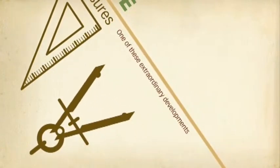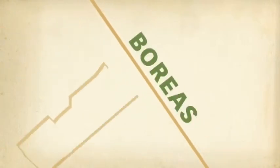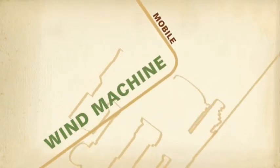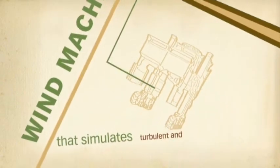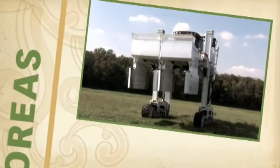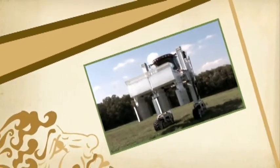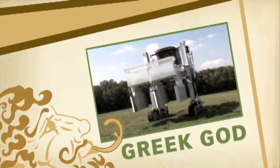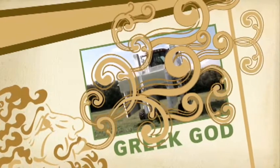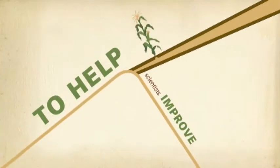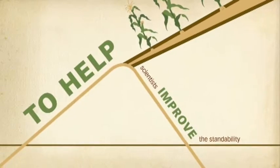One of these extraordinary developments is the invention of Boreas, an enormous mobile wind machine that simulates the turbulent and violent winds which occur during severe thunderstorms. Boreas, whose name is inspired by the Greek god of the cold north wind, punishes Pioneer research plots to help scientists improve the standability of Pioneer hybrids.